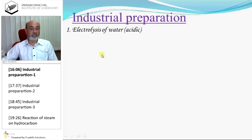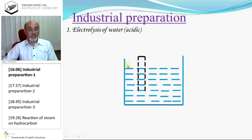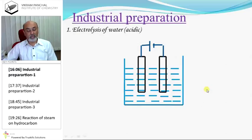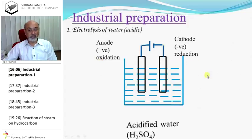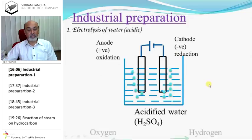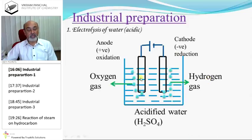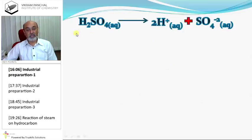Industrial production of hydrogen by electrolysis of water: take acidic water with dilute H2SO4 or HCl and pass current through electrodes. The anode is positive where oxidation takes place. The cathode is negative where reduction takes place. Oxygen gas is released at the anode and hydrogen gas is released at the cathode.